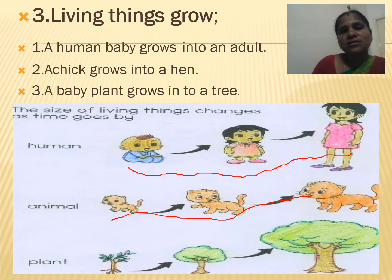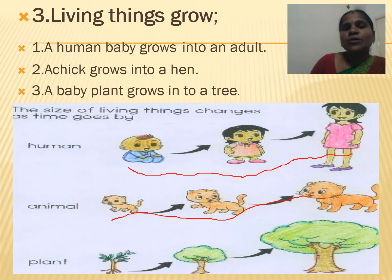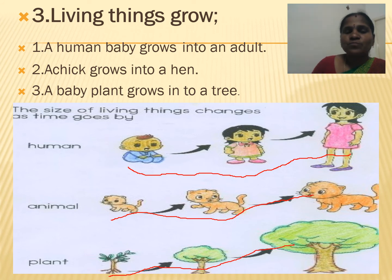What about plants — can plants reproduce? Yes, plants can reproduce in many ways. Some plants reproduce by seeds, some by stem, some by leaves, and some by flowers. Each and every part of a plant can reproduce in different plants. A small seed grows into a big tree, so even plants grow.